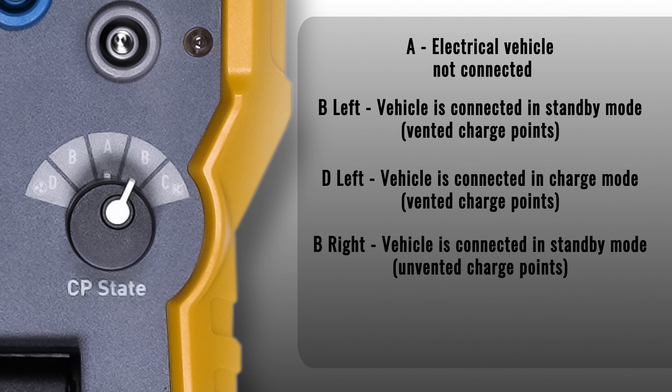B right: vehicle is connected. The charge point is now energized and in standby mode. This is for connection with unvented charge points.